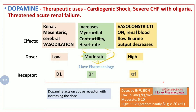At higher doses, dopamine mainly acts on alpha-1 receptors. Alpha-1 receptors are present in the blood vessels, so activation of alpha-1 receptors causes vasoconstriction, including vasoconstriction of the renal blood vessels, leading to a decrease in renal blood flow and a decrease in urinary output. The route of administration is slow IV infusion.